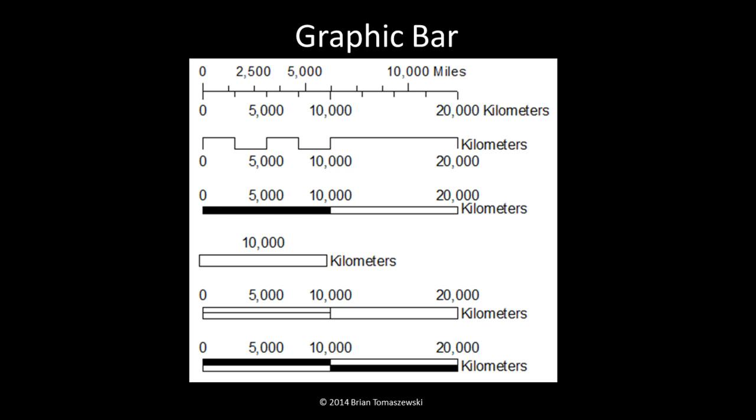Another important aspect of graphic bar scales is that they can adjust as the extent of the map changes. For example, if an 11-inch by 17-inch paper map is physically reduced in size, the graphic bar scale will be reduced accordingly and can still be relevant for calculating ground distances. The same cannot be said for representative fraction and verbal scale representations, as physical changes to a map alter the proportions in these types of representations.